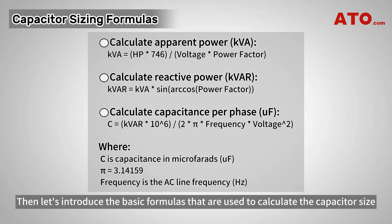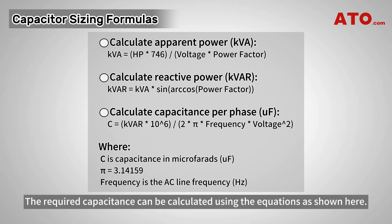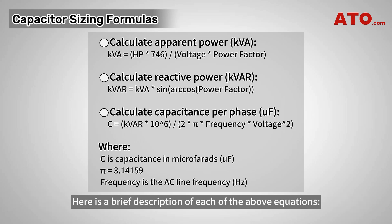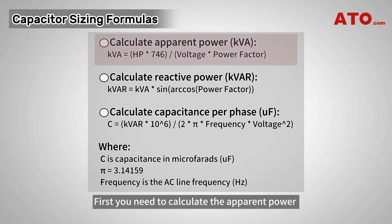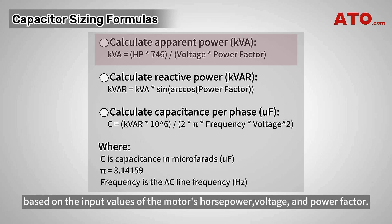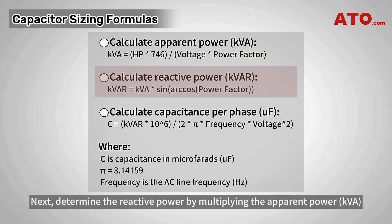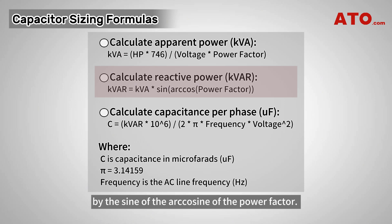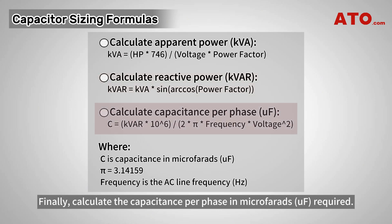Let's introduce the basic formulas used to calculate the capacitor size for an electric motor. The required capacitance can be calculated using the equations shown here. First, calculate the apparent power based on the input values of the motor's horsepower, voltage, and power factor. Next, determine the reactive power by multiplying the apparent power by the sine of the arc cosine of the power factor. Finally, calculate the capacitance per phase in microfarads required.